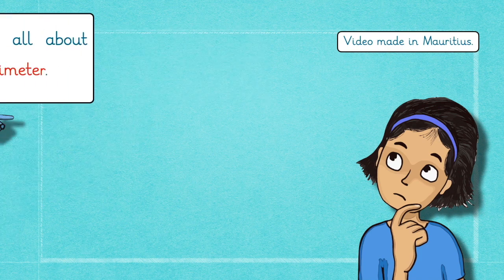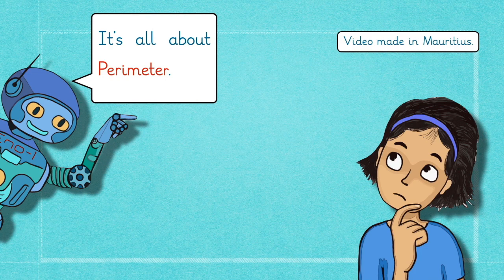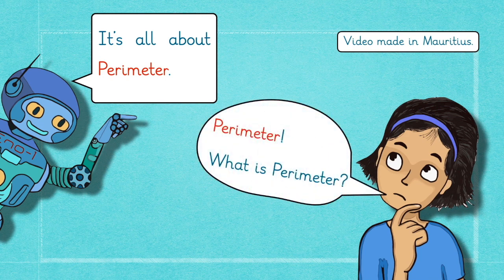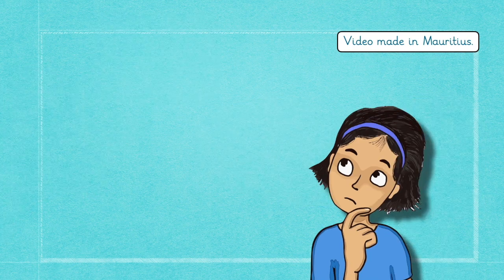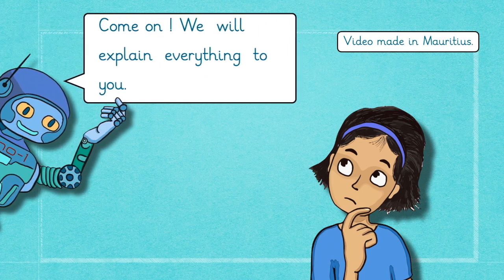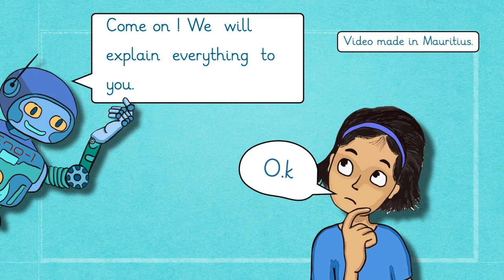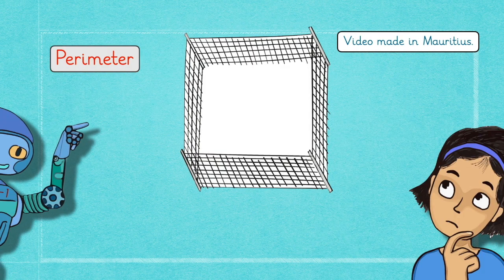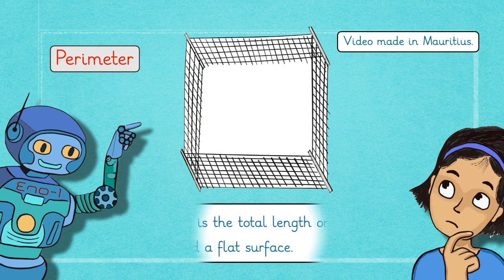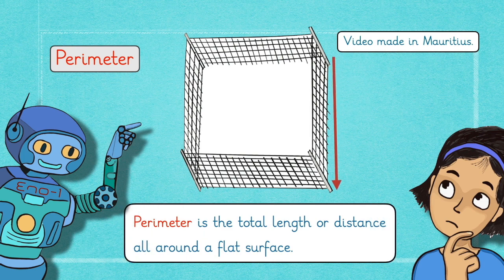It's all about perimeter. Yeah, you're right, Inouane. Perimeter? What is perimeter? Come on, we will explain everything to you. Okay, Inouane. In fact, perimeter is the total length or distance all around a flat surface.